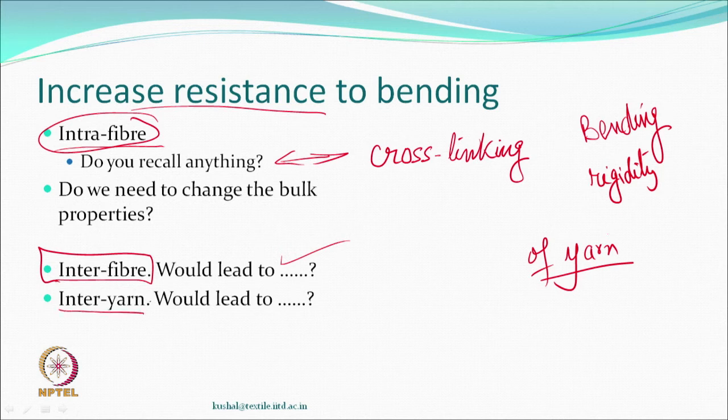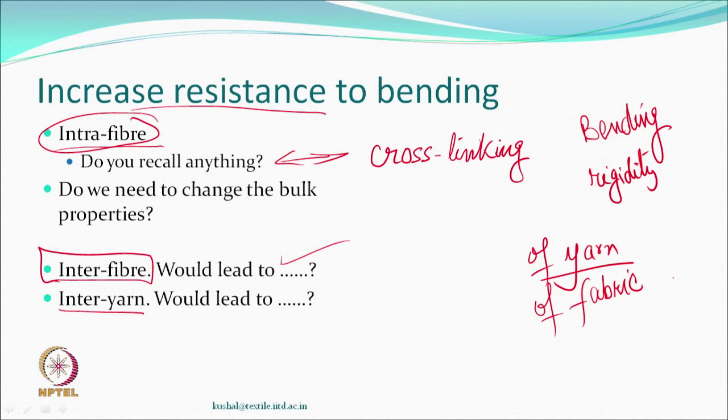If you do the same thing in an inter-yarn situation, it would mean that we are changing the bending rigidity of the fabric. So, based on what we do for increasing the resistance to bending, we can act at the level of the fibre, the yarn, or the fabric. Invariably, we may be most interested in handling fabrics and changing the bending rigidity of the fabric to make it stiff.